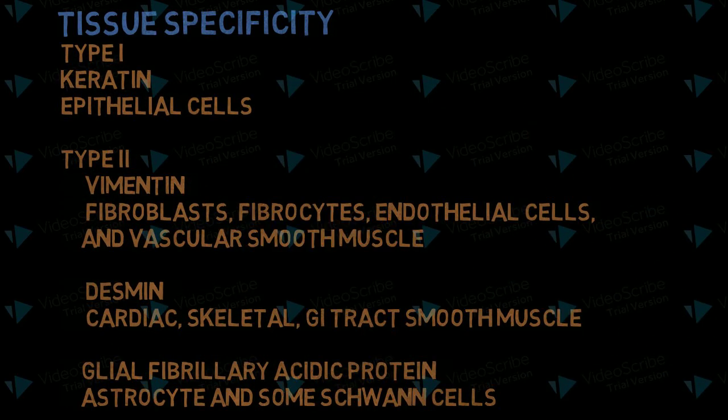Type 1 intermediate filaments is keratin, present in all epithelial cells. Type 2 is vimentin, present in fibroblast, fibrocyte, endothelial cells, and vascular smooth muscle.